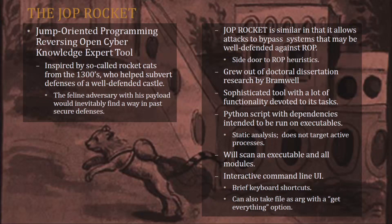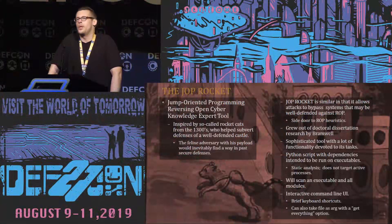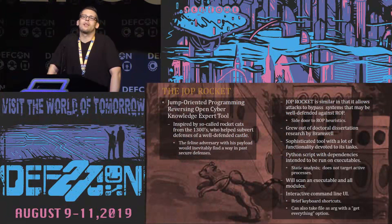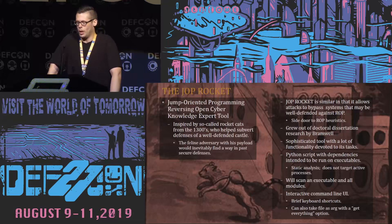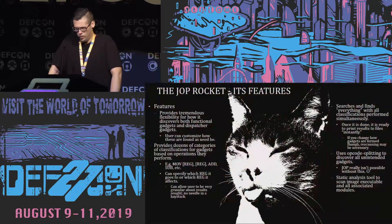The JOP Rocket is a Python script with dependencies. It can run in both Windows and Linux environments and performs static analysis. You can take an executable or PE and scan it as well as all its associated modules and DLLs. It features a command-line user interface with brief keyboard shortcuts that are easy to memorize and utilize, and includes a convenient 'get everything' option.